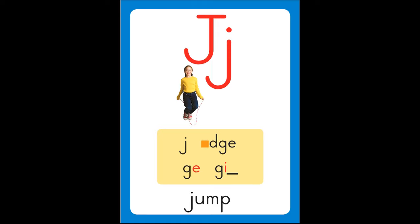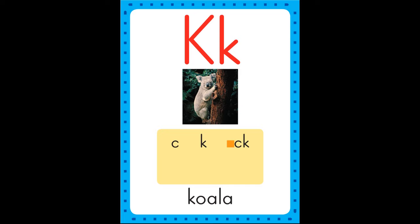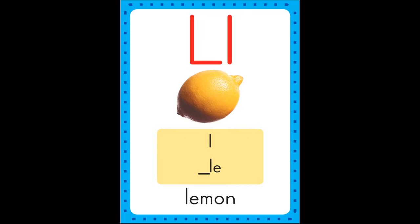J is for jump, j-j-jump. K is for koala, k-k-koala. L is for lemon, l-l-lemon.